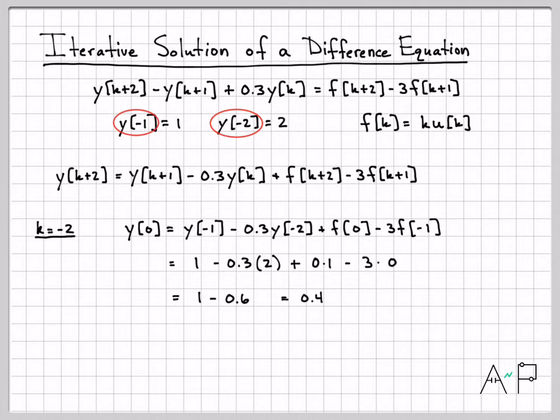So now I know one more value in my signal Y of K. I know the value at time zero. Let's do another one. Let's pick another time. The next time I'm going to pick is K of minus one, because if I replace K of minus one here, negative one plus two is one, and I can solve for my signal at time one.